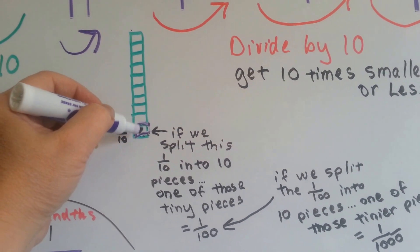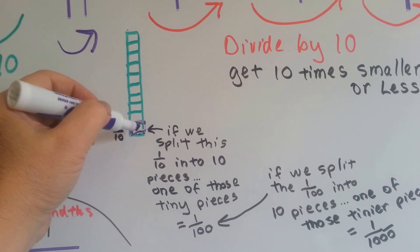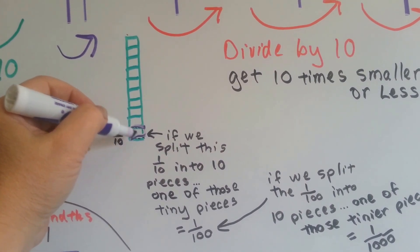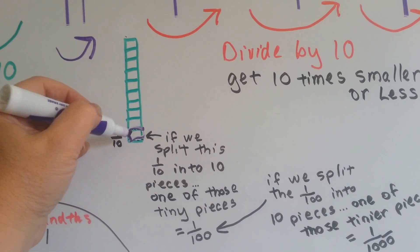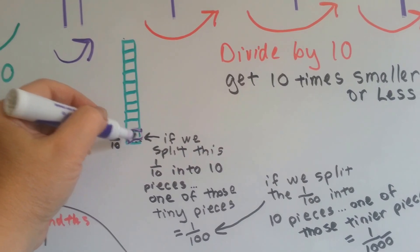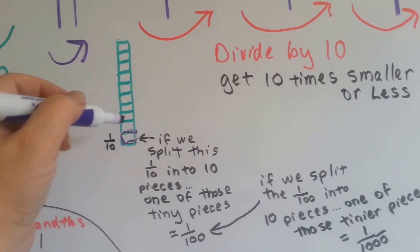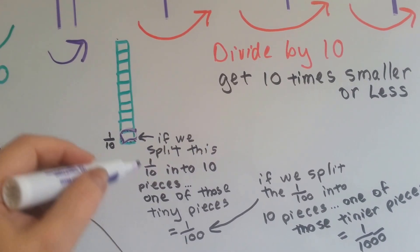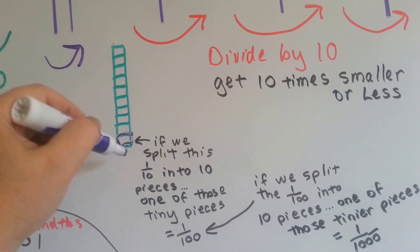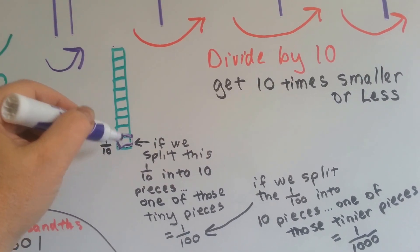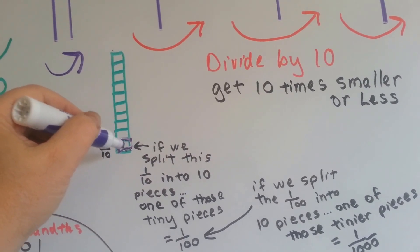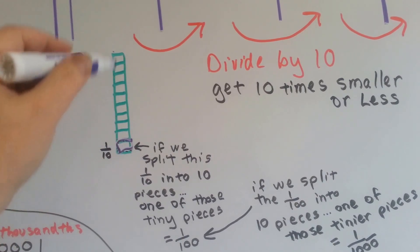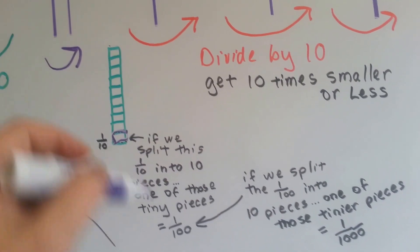If I split this little box into ten pieces — ten little tiny pieces — can you imagine how tiny they would be? That would be one hundredth, because it was already one tenth, and if I split it into ten pieces, it's now one hundredth of this bar.